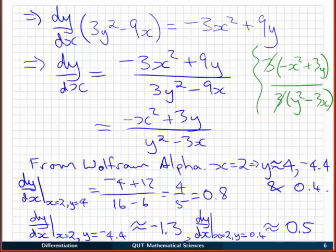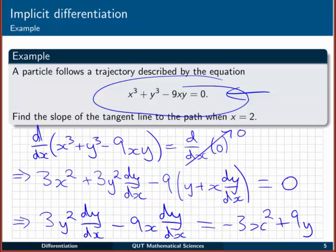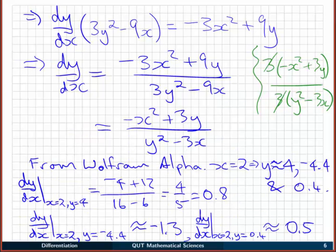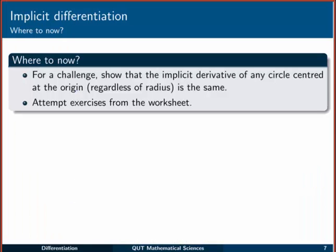Okay, so that is some implicit differentiation, this time on an application of a particle's trajectory. And we've found how that slope of the tangent can be a little bit complicated because you get more values than you might expect in a normal function. Okay, so where to now? There are some exercises for this in the worksheets. But for a challenge, maybe something you could do is try to show that the implicit derivative of any circle centered at the origin, regardless of the radius, show that the implicit derivative of that is the same thing. Have a look at that one if you're looking for something a little tougher.